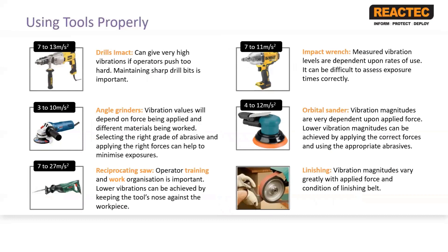The second grouping covers tools seen in manufacturing environments. For orbital sanders it is very important in terms of both the operator's technique and how much force they apply — less force is better, letting the tool do its work and minimising vibration. The use of correct appropriate abrasives and their condition also significantly influences orbital sanders and angle grinders. Another example is holding a work piece against a vibrating surface — though not a tool itself, the person holding the piece is very much exposed to vibration.